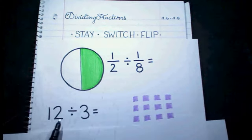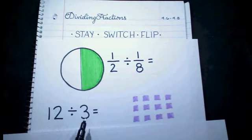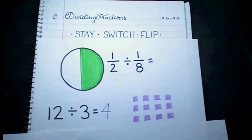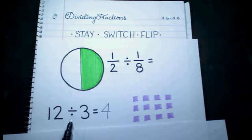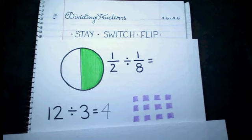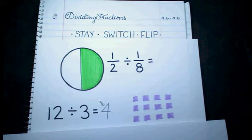So in this problem I have 12 divided by 3. We know from our experience with division that this answer is going to be 4, but let's look at why the answer is 4. Remember with division, I can interpret this problem two different ways: I can either interpret it as asking how many groups of 3 I can make, or if I make 3 groups, how many would be in each group. Either way, I'm starting with my total and working backwards to find my answer.